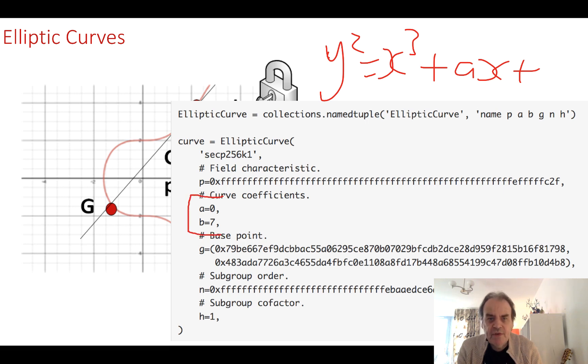There are various elliptic curves that we can use. We can see here that the a value is zero and the b value is seven, so in this case our elliptic curve is this. Then we take our p value, which is our prime, and we make it mod of that prime.